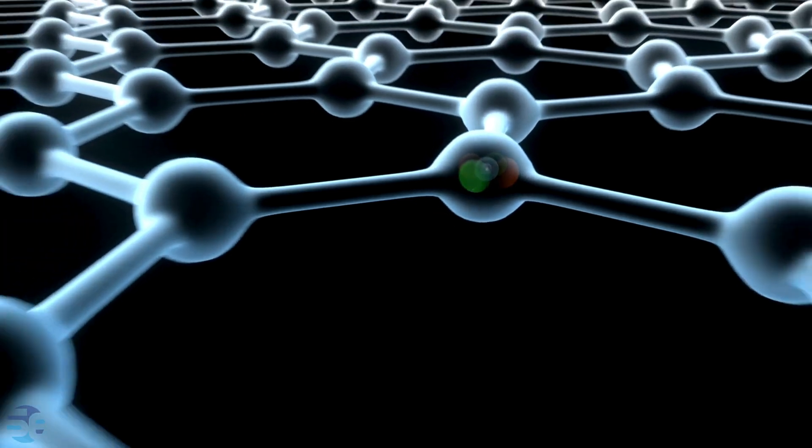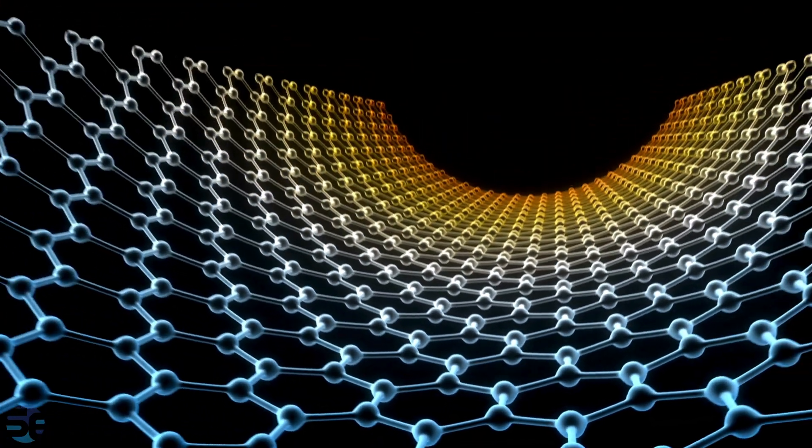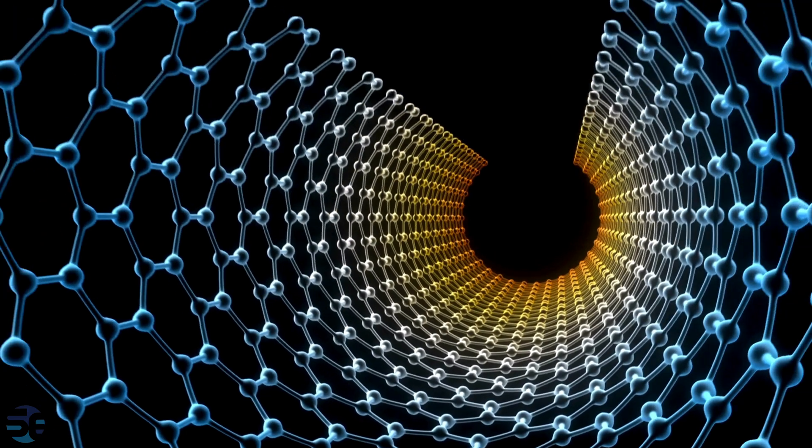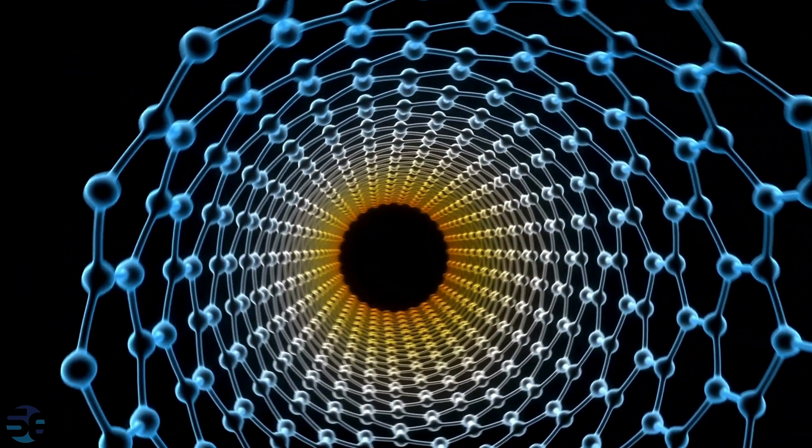Carbon nanotubes are classified into several types based on their structure, which primarily depends on how the carbon atoms are arranged. The two main types of carbon nanotubes are single-walled carbon nanotubes and multi-walled carbon nanotubes.